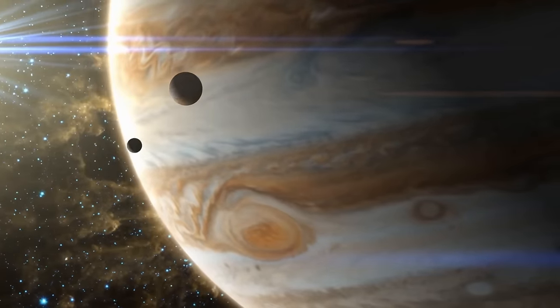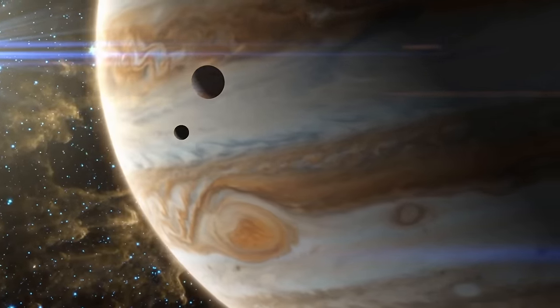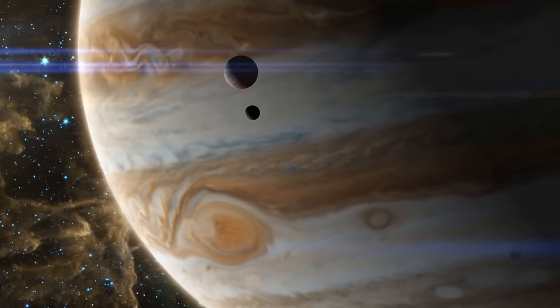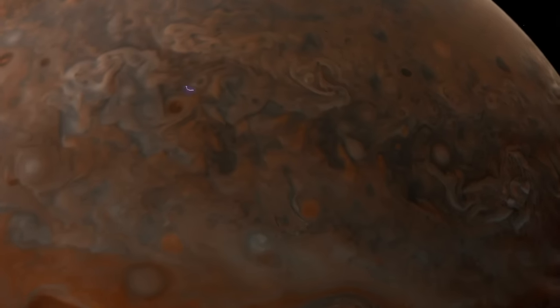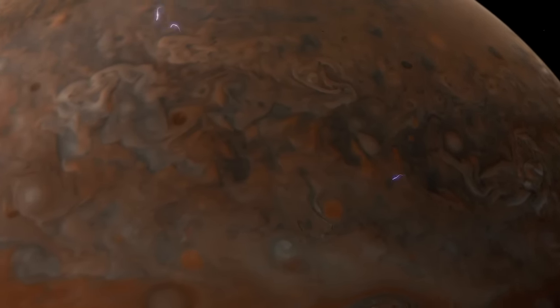Now, storms are no stranger to Jupiter's atmosphere. But where there are storms, there is lightning, right? Yeah, but the bolts of lightning on Jupiter turned out to be very strange.